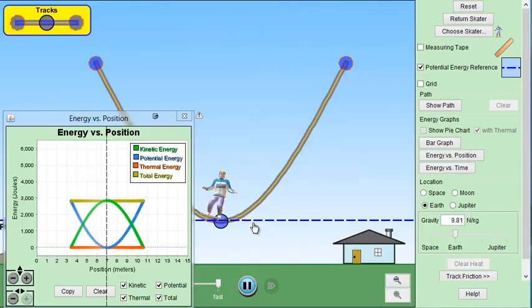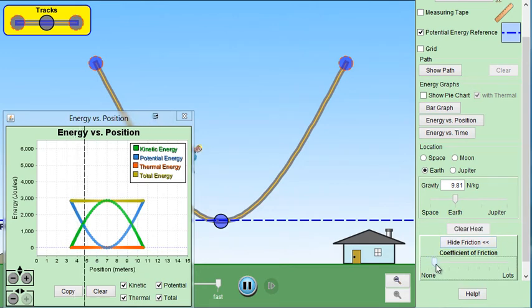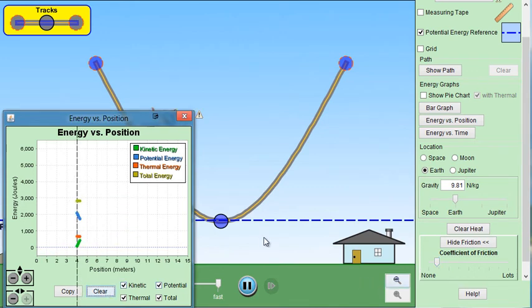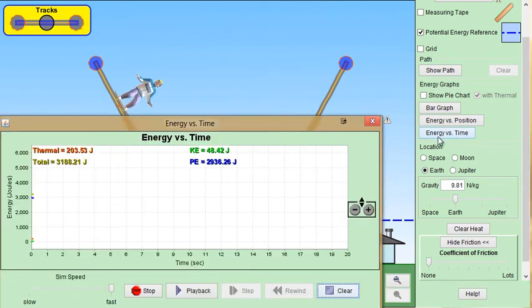All right, now what happens when we add in friction? So we are back with Ken. We are going to add some friction here, just a little bit of friction. And notice what is happening with the graphs over here. Let me clear it so we can start from scratch here. So this is a good time to show you another type of graph that will be helpful for you, Energy versus time.